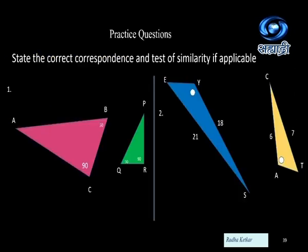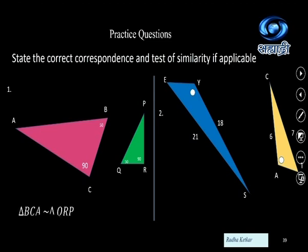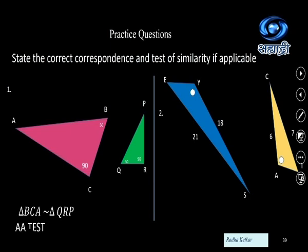Now let us practice what we have learned. You have to state the correct correspondence and test of similarity if applicable. In the first question, triangle ABC and triangle PQR are given. Angle B is congruent to angle Q, and angle C is congruent to angle R. Even if only two angles are congruent to the corresponding angles of the other triangle, we can say they are similar by AA test. So triangle BCA is similar to triangle QRP by AA test.